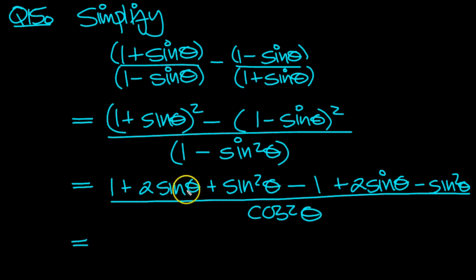So what have we got then? Well, we've got a minus sin squared and a plus sin squared. We've got a 1 and a minus 1. So we end up with 4 sin theta over cosine squared theta.